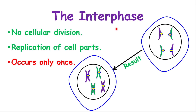In interphase, just like any regular cell, there will be no nuclear division and no cytoplasmic division — the cell will not be dividing at this point. However, the cell will replicate its parts. Using color in this example: if I started out with two greens and two purples, after replication you should end up with four greens and four purples. An important point to emphasize is that interphase only occurs once.